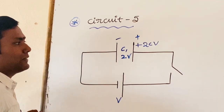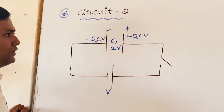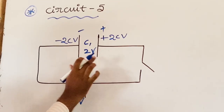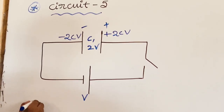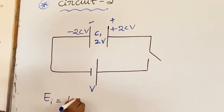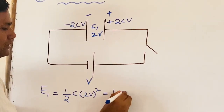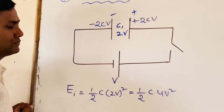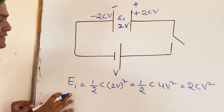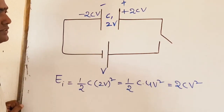The charge on the negative plate is minus 2CV. The total energy stored between the plates of the capacitor before closing the switch is EI = ½C(2V)² = ½C × 4V² = 2CV².